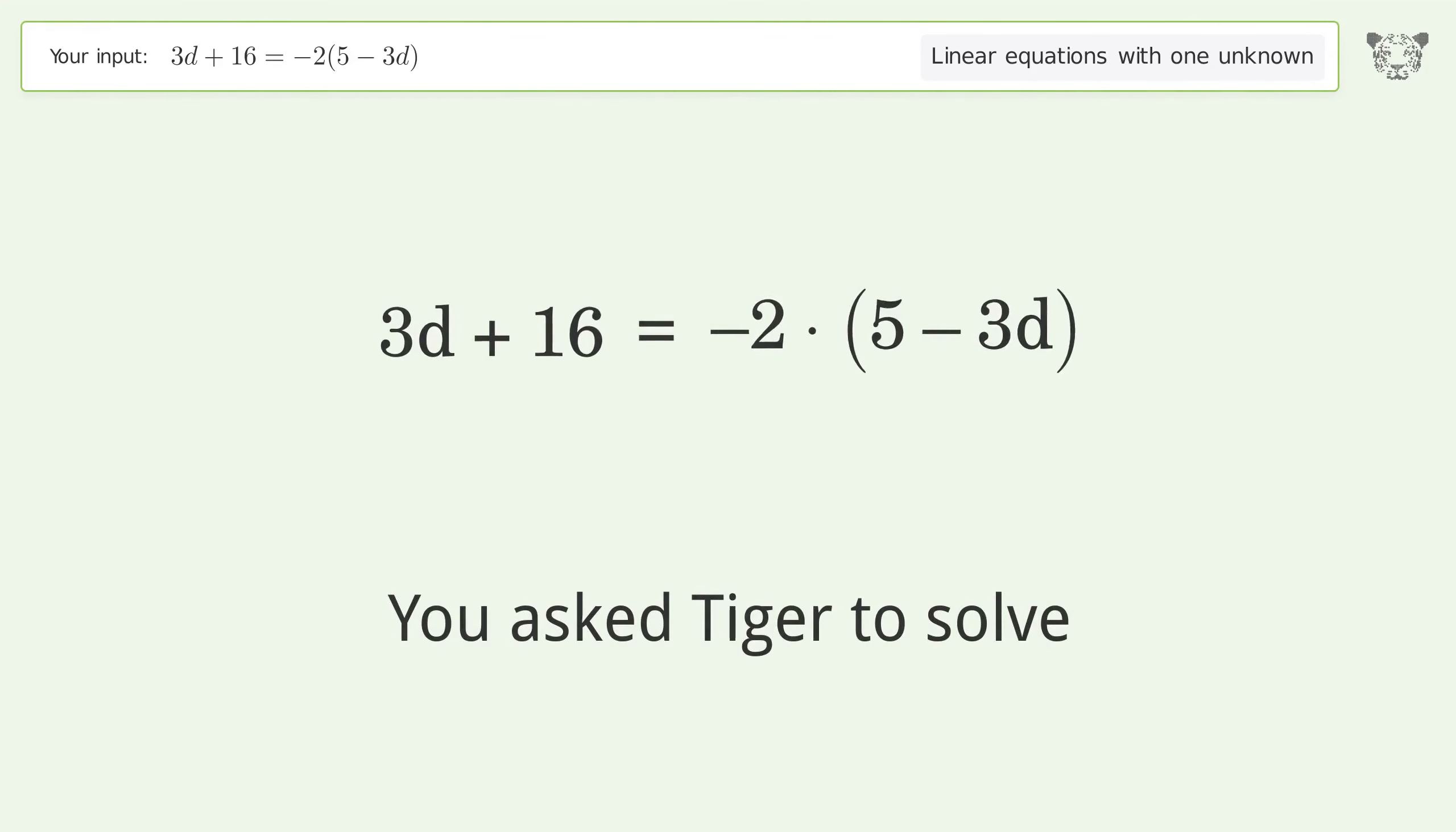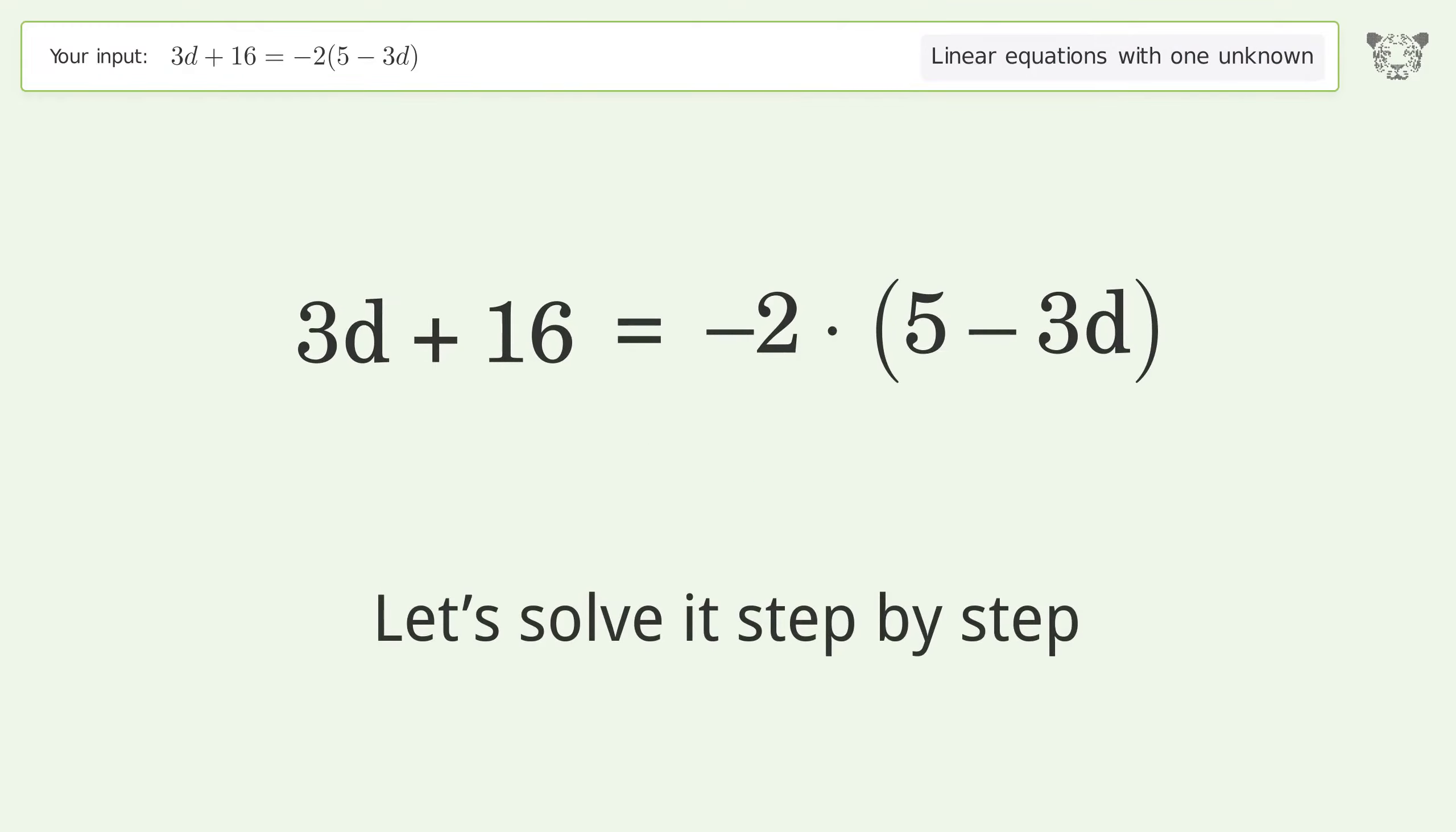You asked Tiger to solve this linear equation with one unknown. The final result is d equals 26 over 3. Let's solve it step by step.